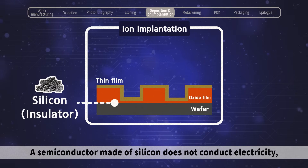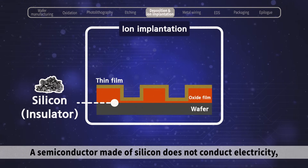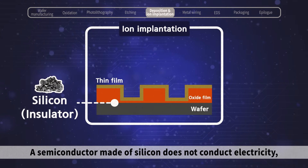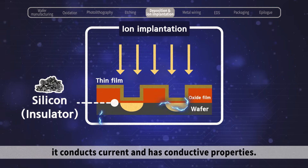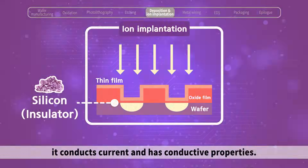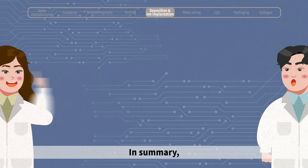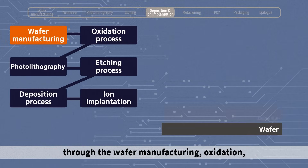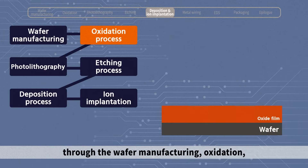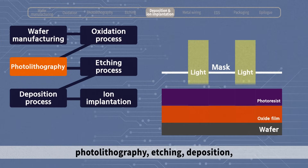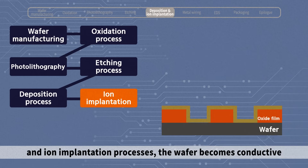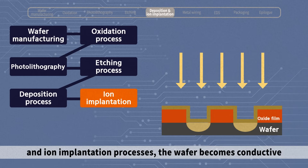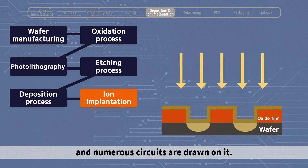A semiconductor made of silicon does not conduct electricity, but by adding impurities, it conducts current and has conductive properties. In summary, through the wafer manufacturing, oxidation, photolithography, etching, deposition and ion implementation processes, the wafer becomes conductive and numerous circuits are drawn on it.